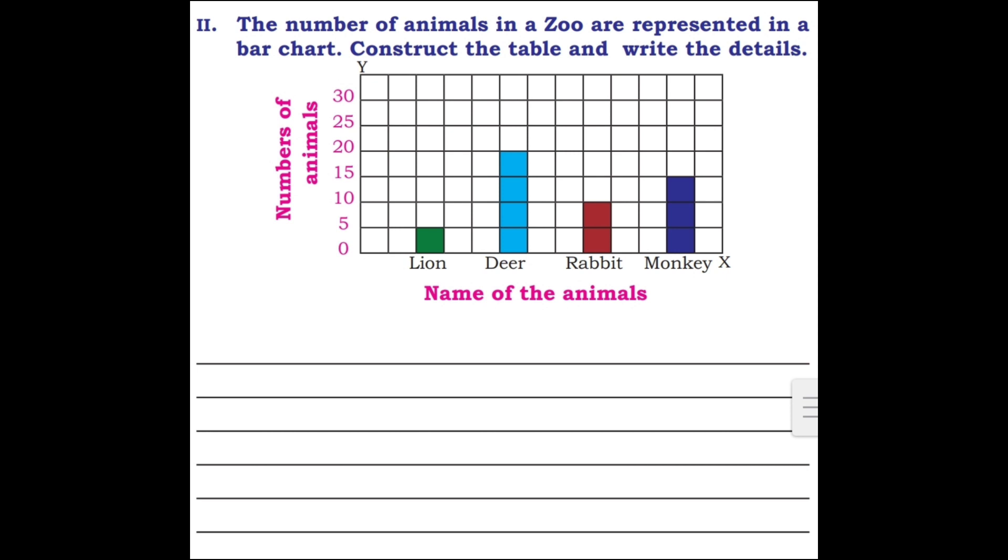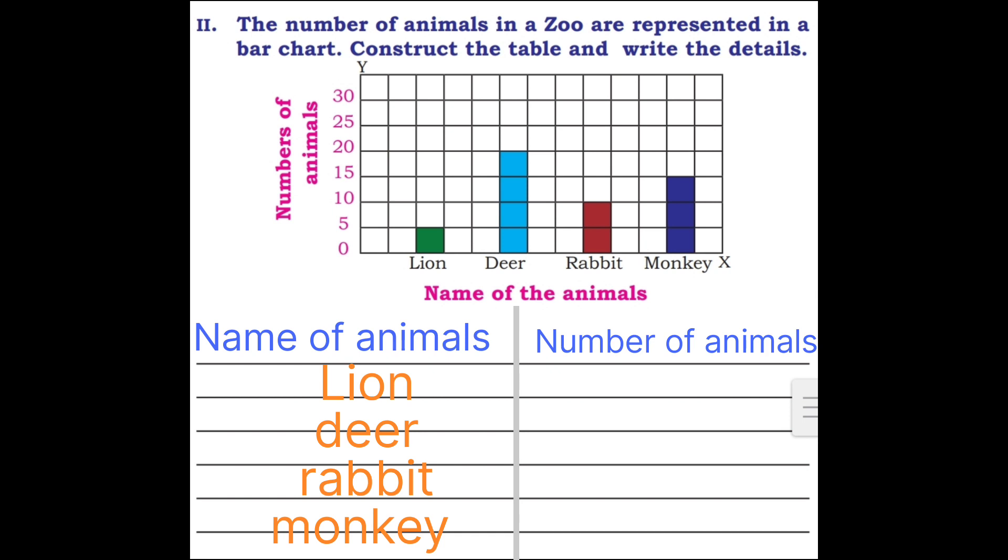Second question, the number of animals in a zoo are represented in a bar chart. Construct the table and write the details. X-axis has name of the animals and Y-axis has number of animals. You have to construct a table from the bar graph. Create a table with columns for name of animals and number of animals. List the animals: lion, deer, rabbit, monkey. Lion is 5, deer 20, rabbit 10, monkey 15. Construct the table from the chart. Here, one box is equal to 5 units.